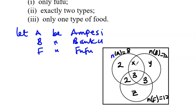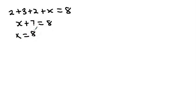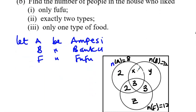To find x, we use the total for the Ampesi circle, which is 8. Adding all values in that circle: 2 (Ampesi & Banku only) + 3 (centre) + 2 (Ampesi & Fufu only) + x = 8. That gives x + 7 = 8, so x equals 8 minus 7, which is 1. The Ampesi-only region is 1.